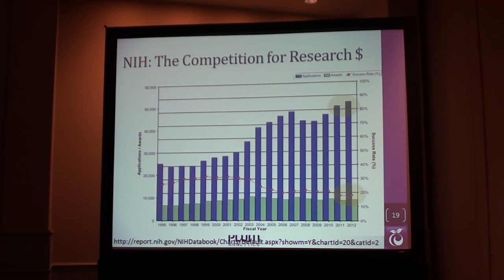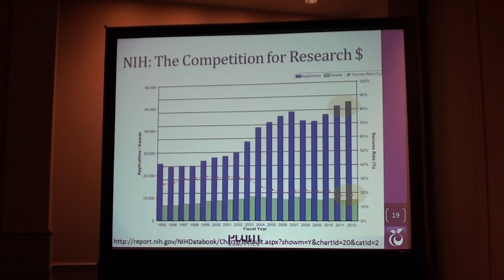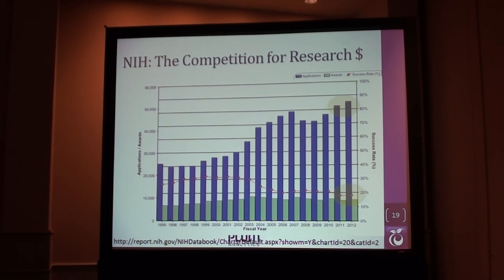This came out about a year ago — it's a chart showing the competition for NIH grants. The submissions continue to go up, and the success rate is down below 20%. So four out of five people are not going to get that grant. How do you use what you have to help you? It's going to get more and more competitive. The more you can say, look, my research is going to give you a lot more impact, that's going to help you.